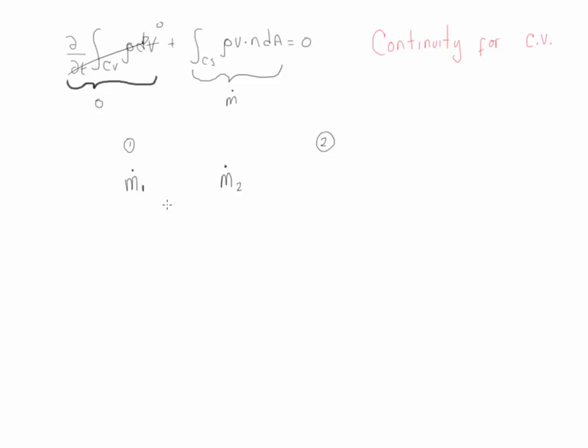Now let's analyze the signs of it. Since mass flow rate at point one is entering the system or the control volume, we have it to be negative. Since the control surface at point two is exiting the control volume, we have it to be positive. And we know that this has to be equal to zero. Therefore, we know that the mass flow rate at point one is equal to the mass flow rate at point two.